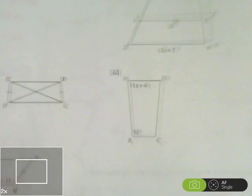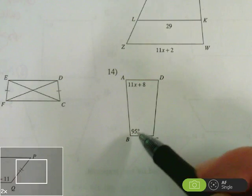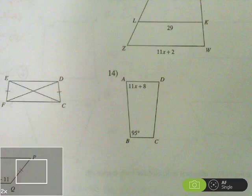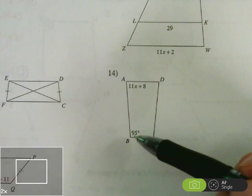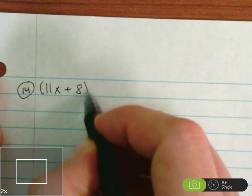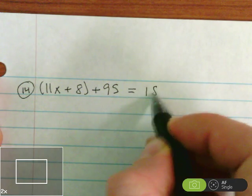Next, we're going to go to number 14. In number 14, we have 11x plus 8 for the angle A and 95 degrees for angle B. This is one of the legs of the trapezoid. The angles at either end of the leg of the trapezoid are supplementary. So 11x plus 8 plus 95 equals 180.